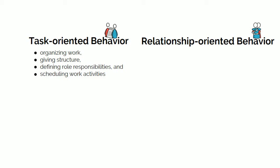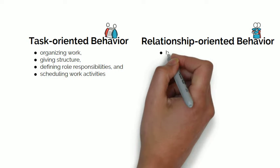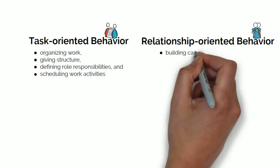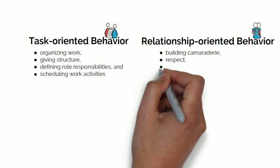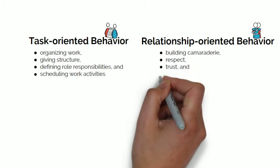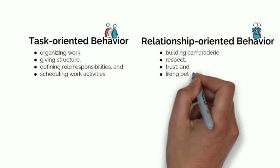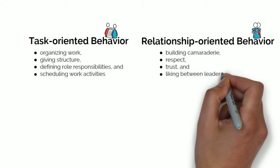Relationship behaviors are those that help group members feel comfortable with themselves, with each other, and with the situation in which they find themselves, and include building camaraderie, respect, trust, and liking between leaders and followers.